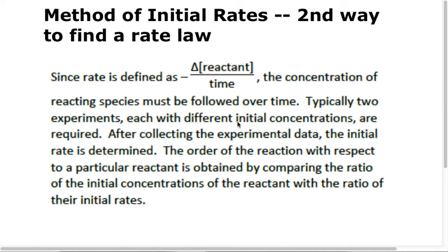The second way to find the rate law. I added to the list our first way was finding mechanisms. How do we find a rate law using a mechanism? Go to the slow step, take the reactants, raise their concentrations to the coefficient. However many are in the slow step is what the order is. So if you have two molecules of something, it's second order. If you have one molecule, it's first order. That's how you do it with mechanisms.